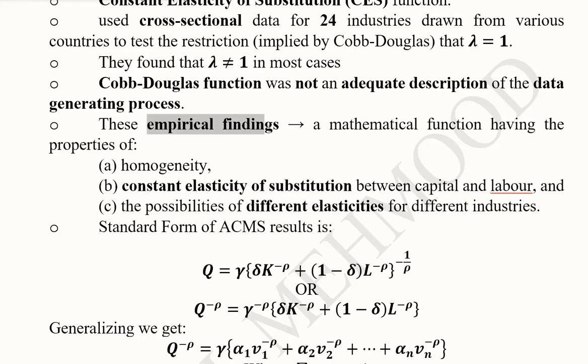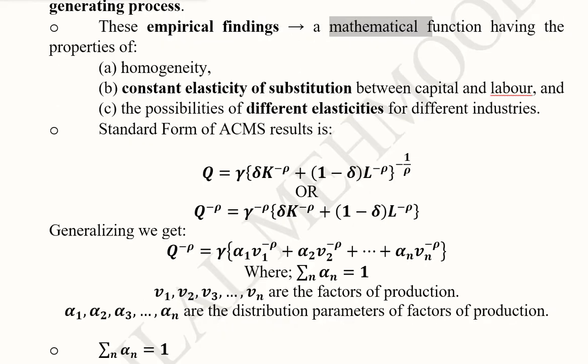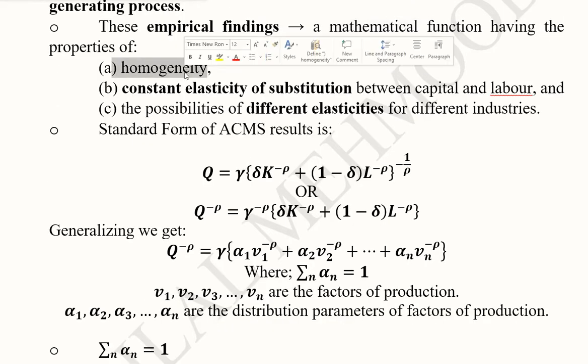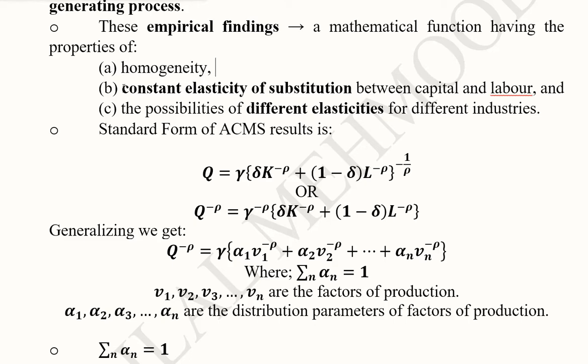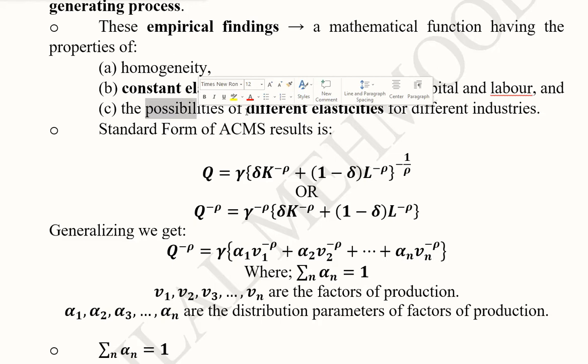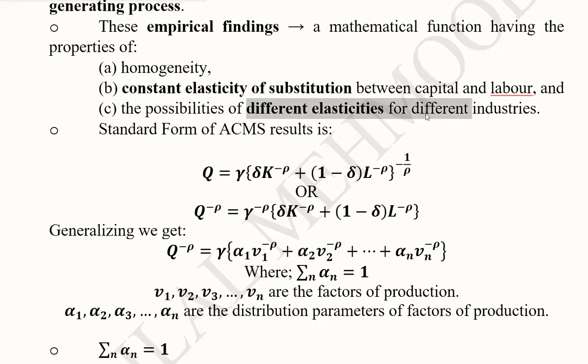They used empirical data to develop a mathematical form with three properties: homogeneity in inputs, constant elasticity of substitution between labor and capital, and the possibility of different elasticities for different industries.